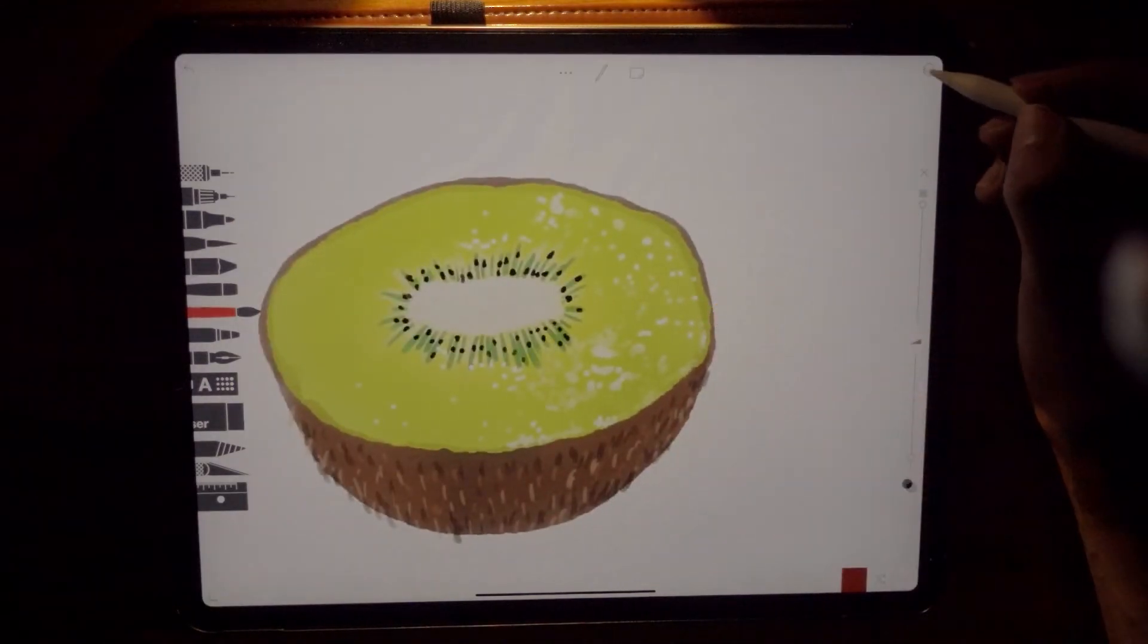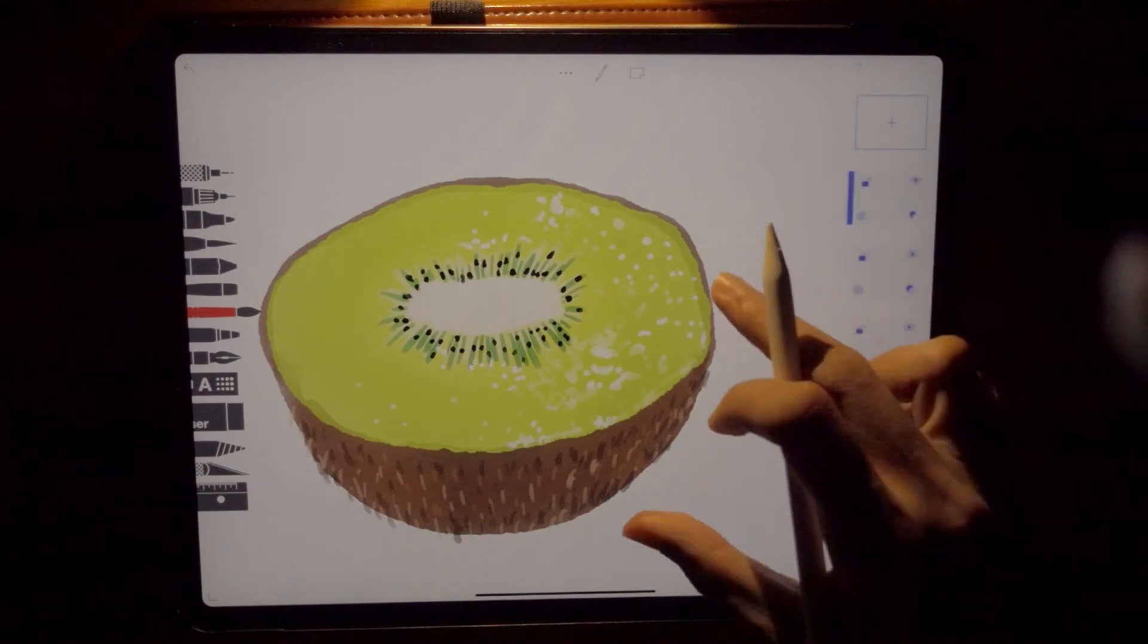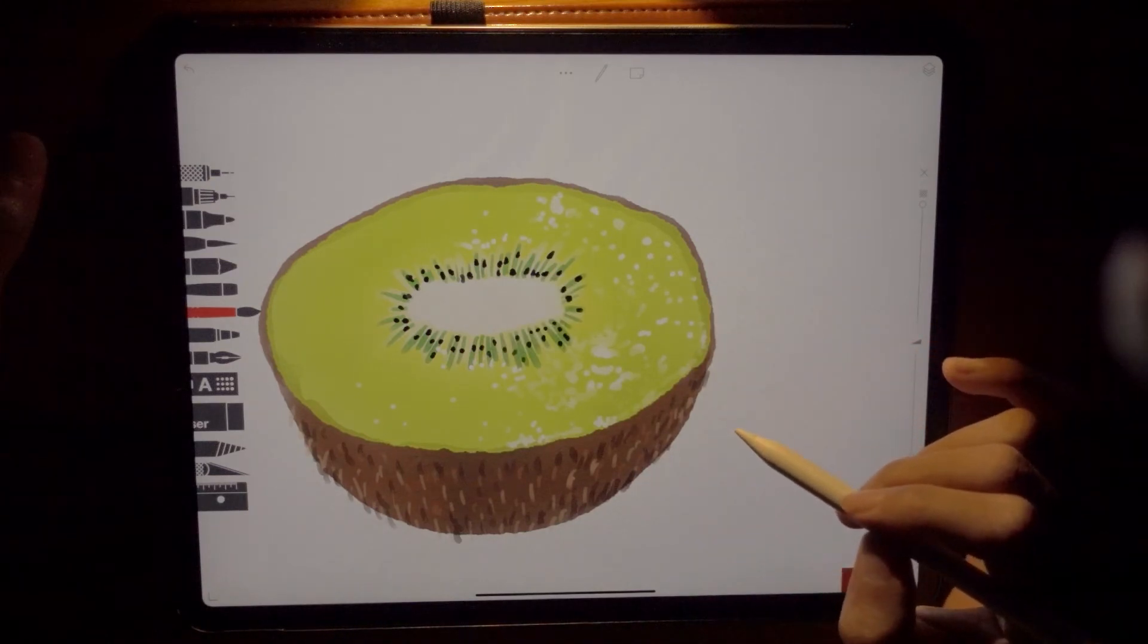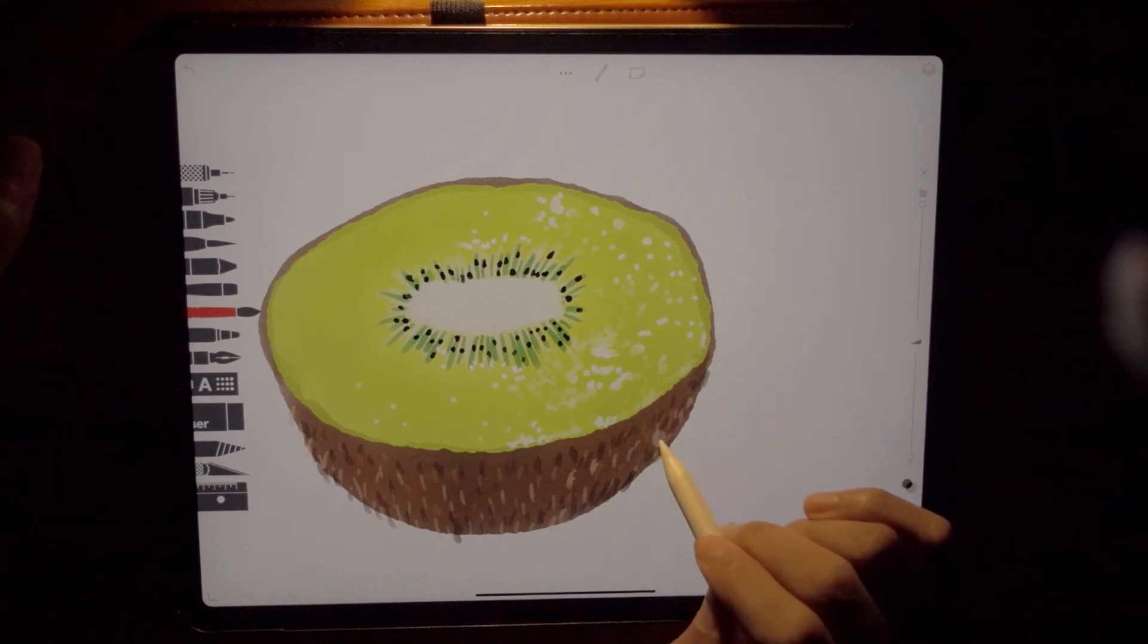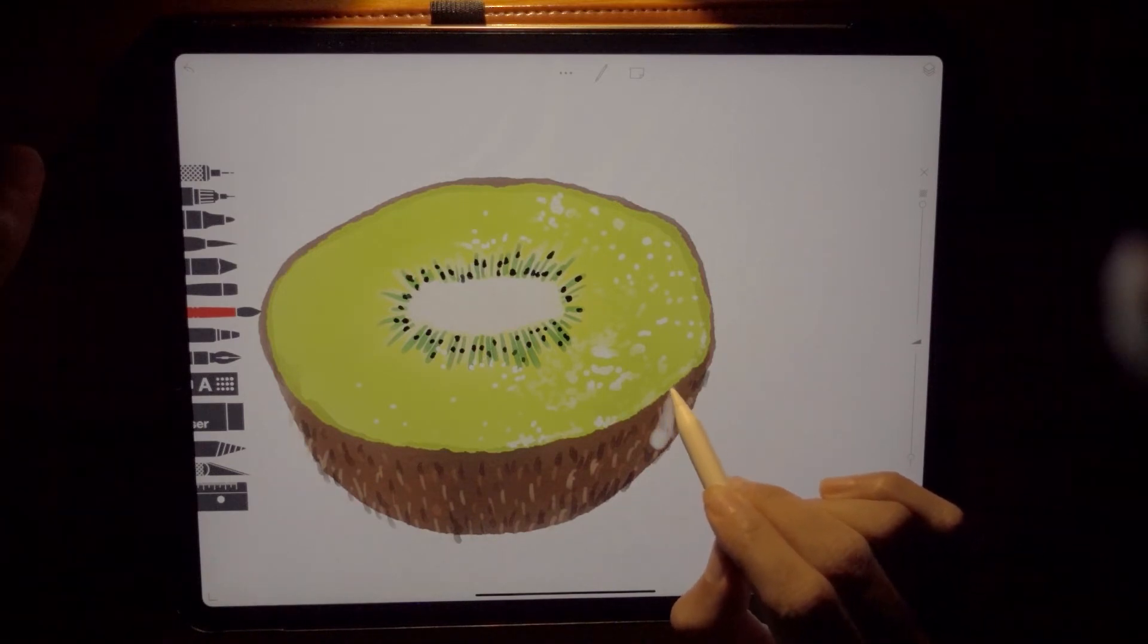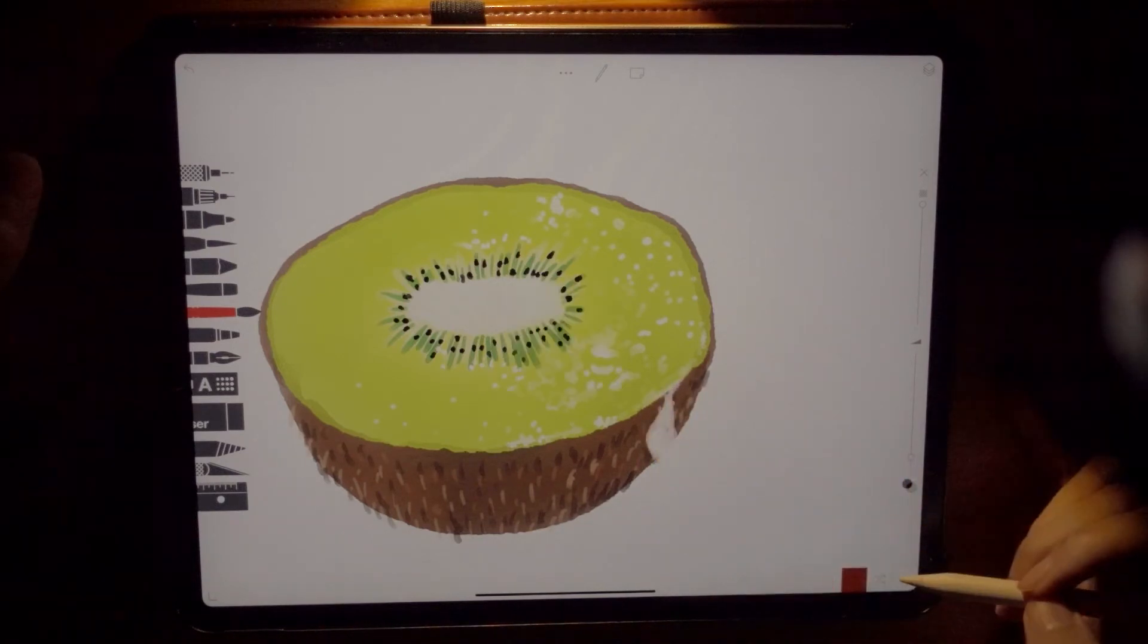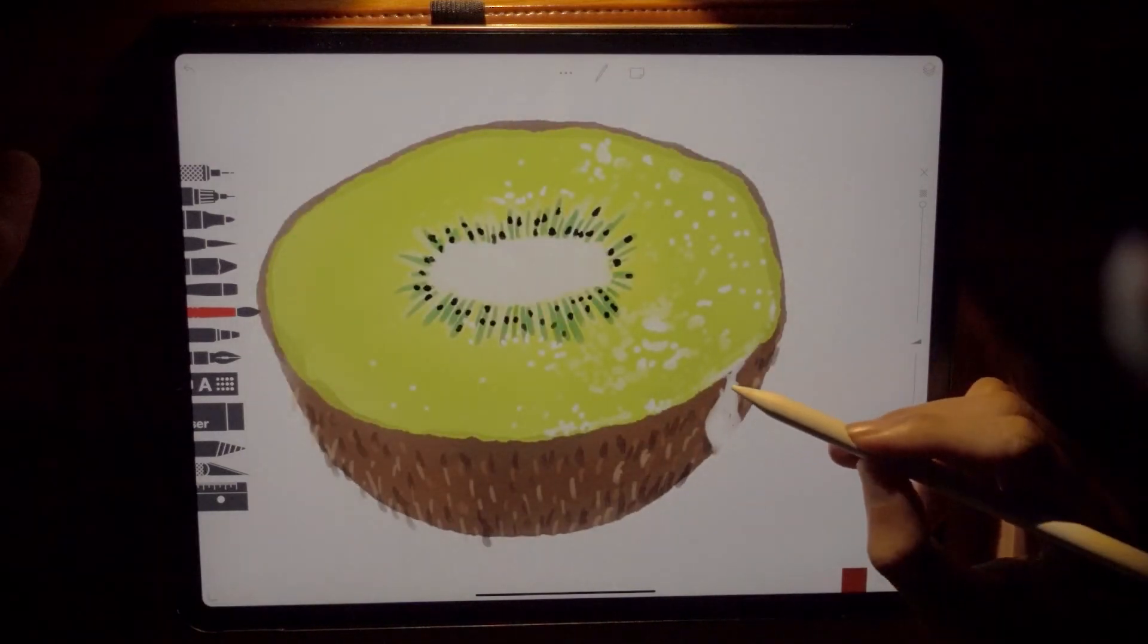Now. Have another layer. We're gonna add something cool right now. We're gonna add, maybe, what do you call that? A drop of liquid. As if the kiwi is dripping with its juice. Like that. Okay.